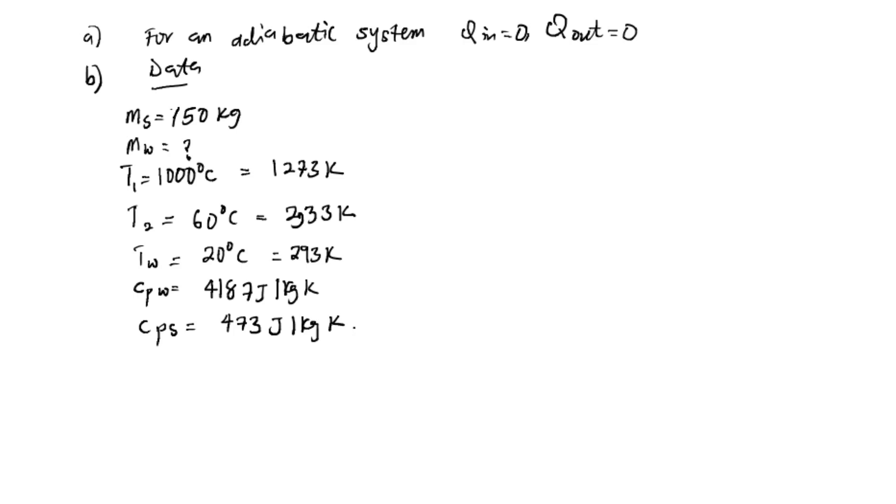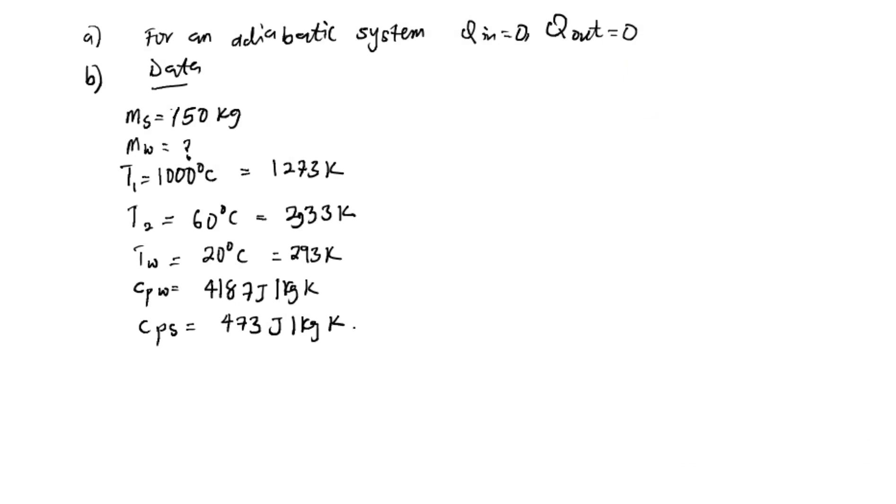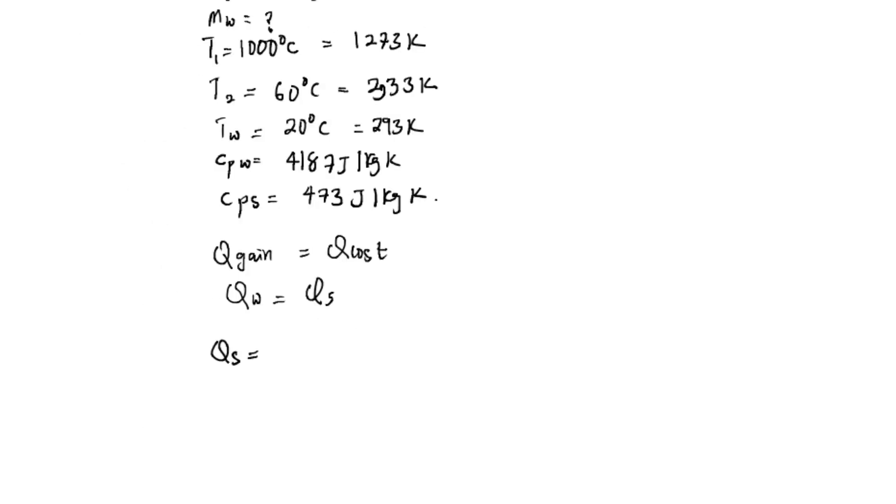Since it is an adiabatic container, there is no heat transfer into or out of the system. This means the change in internal energy occurs within the system such that the heat gained by the water equals the heat lost by the steel. The heat lost by the steel is given by the mass of the steel times specific heat capacity of the steel times temperature change, which is T1 minus T2. This is 150 times 473 times 1273 minus 333.